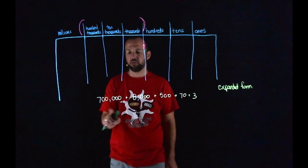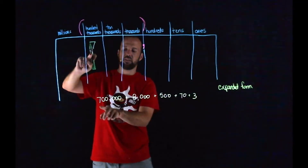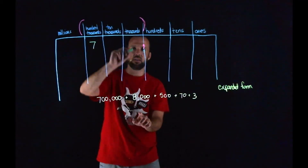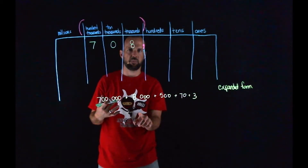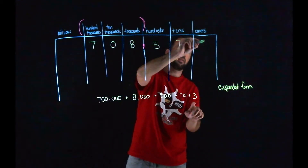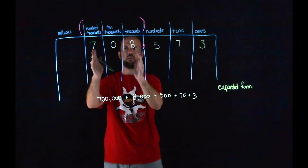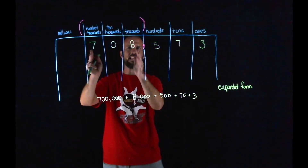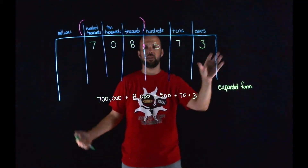So looking at this, the number starts with 700,000. I'm going to go to my 100,000s place and put a 7. Looking next for my 10,000s — I don't have any 10,000s, I have 8,000, so that goes in the 1,000s place and I put a zero in the 10,000s place. Then I have five 100s, seven 10s, and three 1s. So if I read this number looking at my thousands period: 708,573.